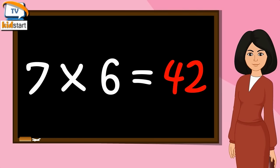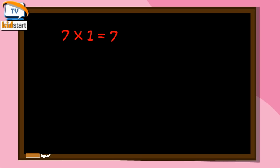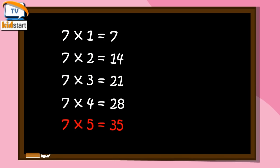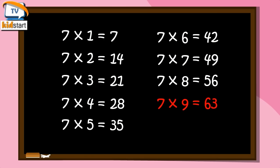Table of Seven. Seven ones are seven. Seven twos are fourteen. Seven threes are twenty-one. Seven fours are twenty-eight. Seven fives are thirty-five. Seven sixes are forty-two. Seven sevens are forty-nine. Seven eights are fifty-six. Seven nines are sixty-three. Seven tens are seventy.